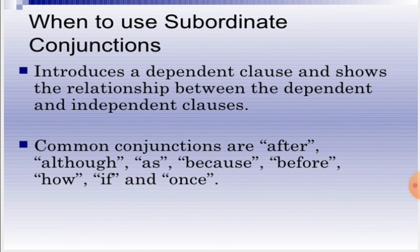Now let us see when to use subordinating conjunctions. When we want to introduce a dependent clause and show the relationship between the dependent and the independent clause, we use subordinating conjunctions. Subordinating conjunctions will have two clauses to join: one dependent and one independent. The common subordinating conjunctions are after, although, as, because, before, how, if, and once.